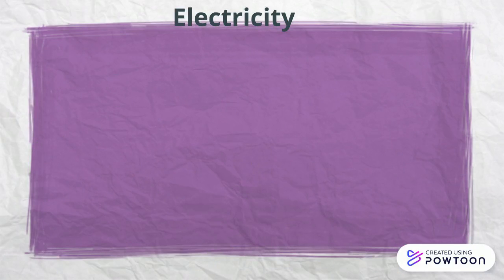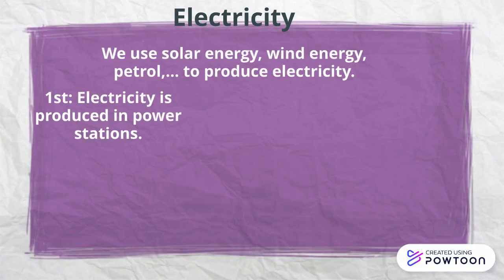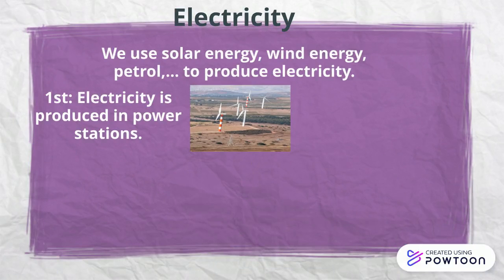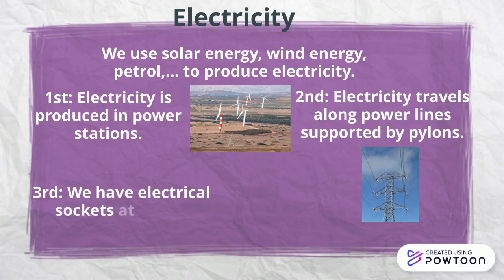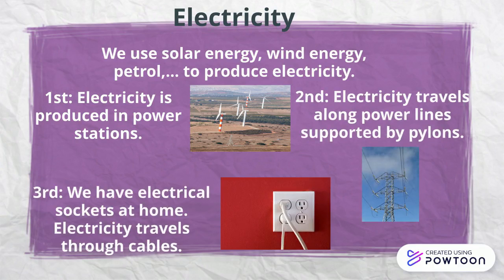Electricity. We use solar energy, wind energy, petrol and more to produce electricity. First, electricity is produced in power stations. Second, electricity travels along power lines supported by pylons. Third, we have electrical sockets at home. Electricity travels through cables.